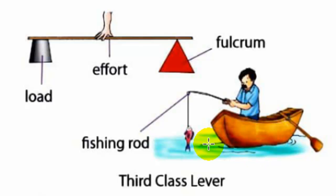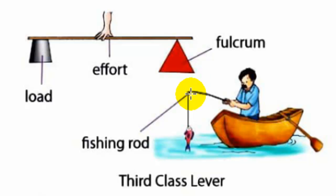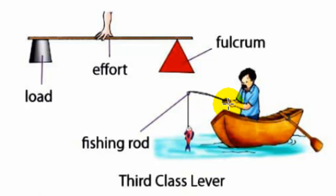Let's discuss the fishing rod example. When you use a fishing rod to catch a fish, the fish acts as the load at one end. You hold the rod and apply effort in the middle, and the far end of the rod is the fulcrum. The effort is between the fulcrum and the load, so the fishing rod is an example of a third class lever.